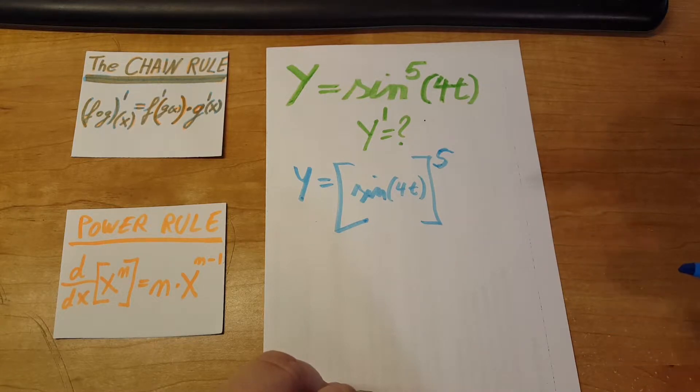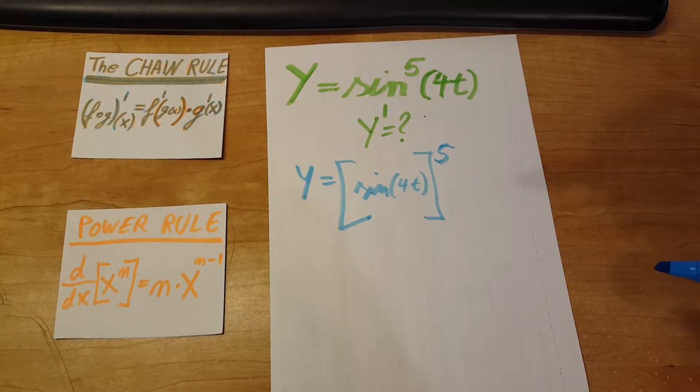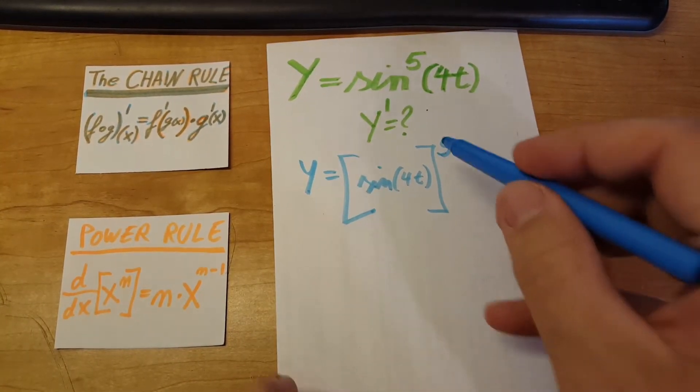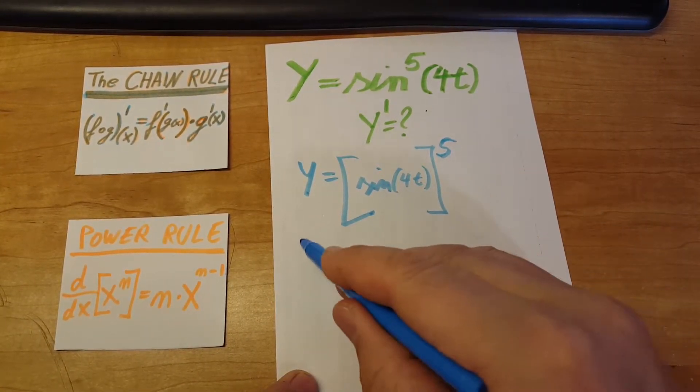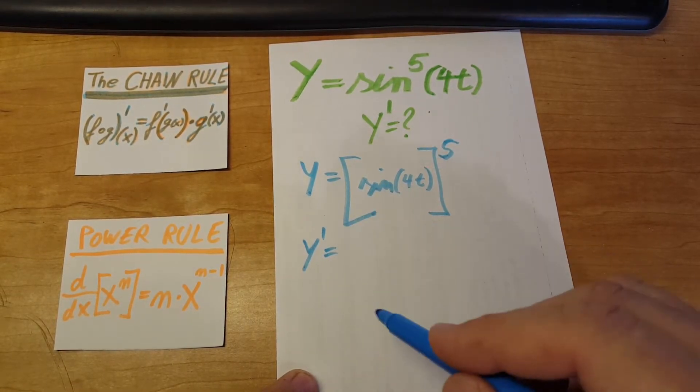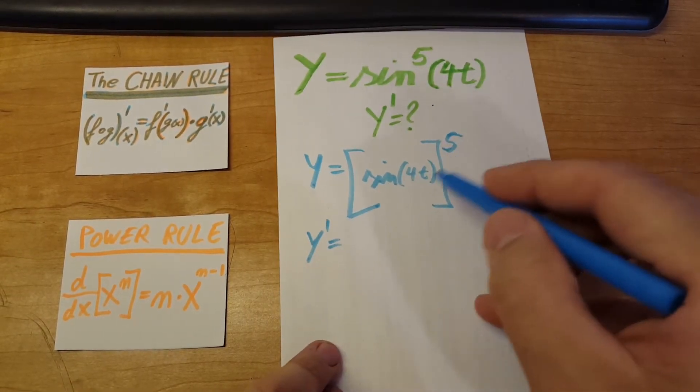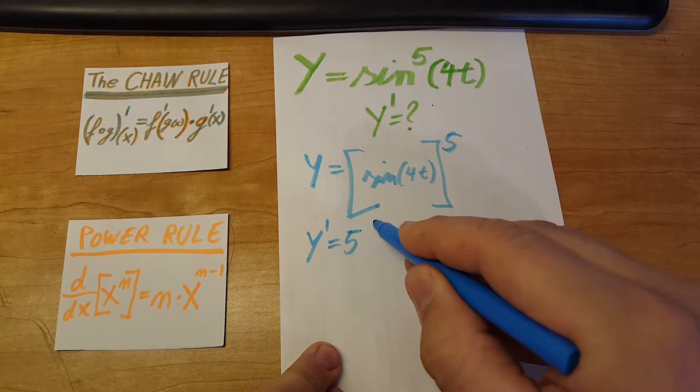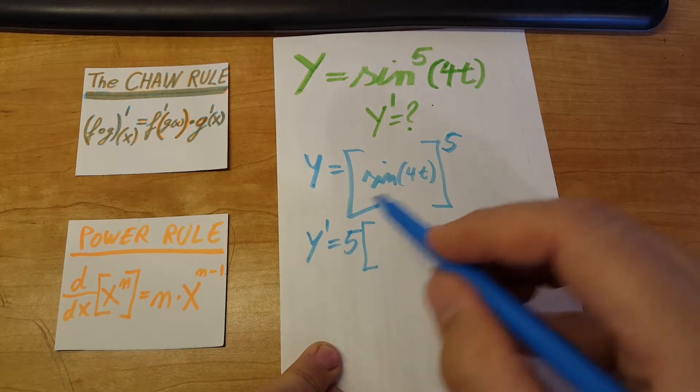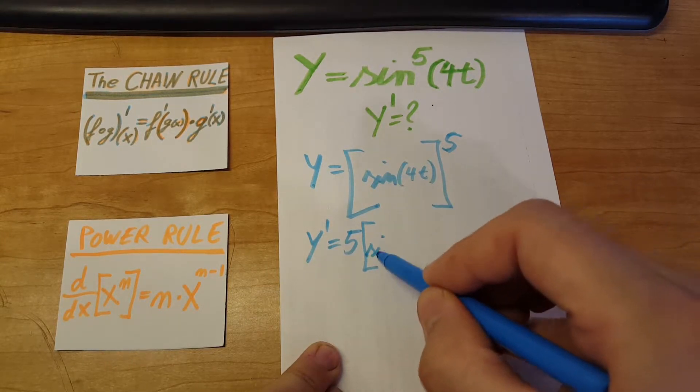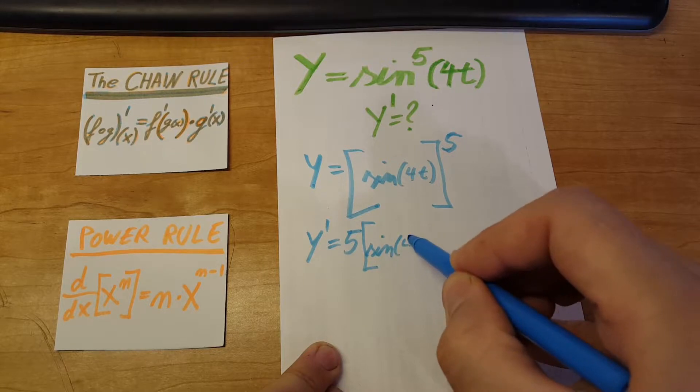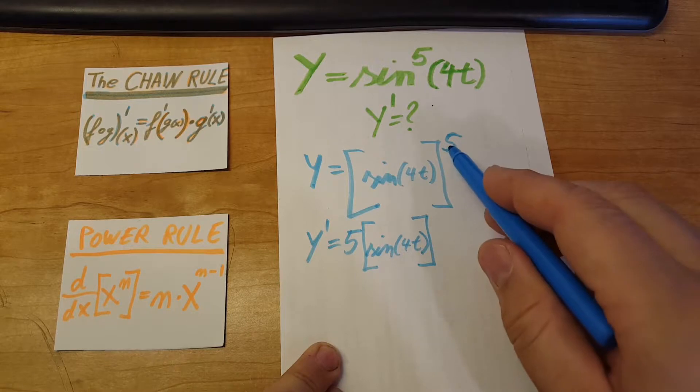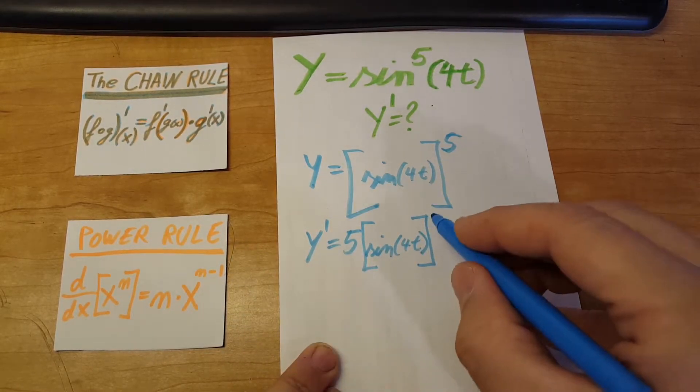Now we can recognize it better that we simply gonna use the chain rule and the power rule. So let's get started. The derivative of y will be, we'll take the derivative of the outside, so 5 comes here times whatever was on the inside stays unchanged, sine of 4t, and n minus 1 from the power rule, it will be 4 over here.